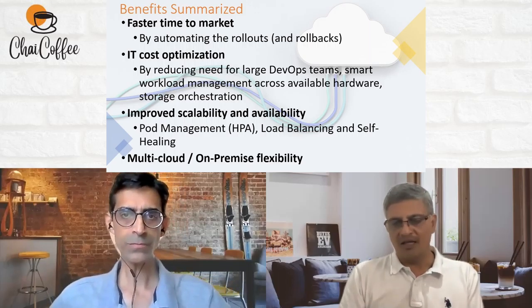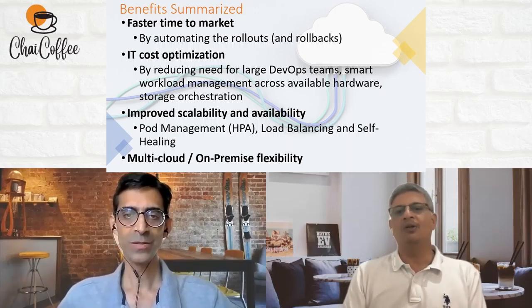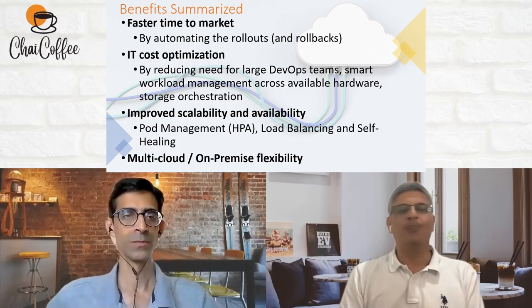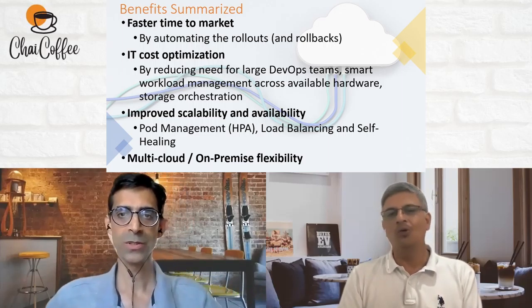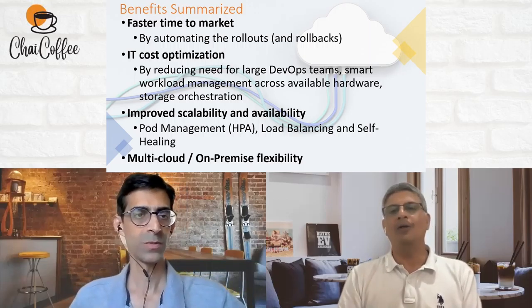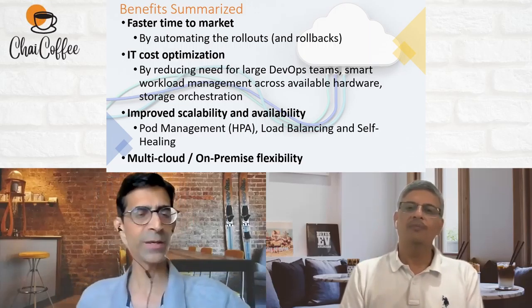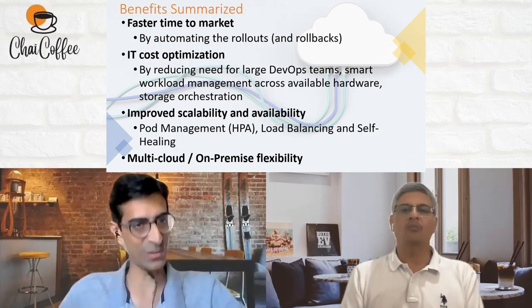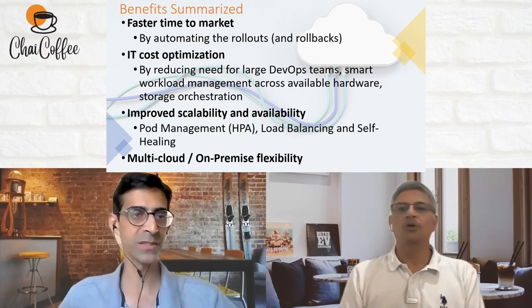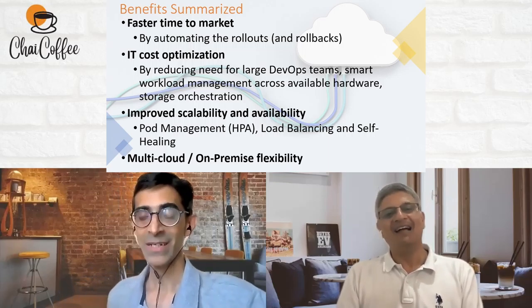Shopify grew really fast. E-commerce has many innovations now — auto-suggestions, personalized recommendations, discounts — all requiring fast rollout of services. Shopify had 500-plus services a few years back, meaning potentially thousands of pods, yet they were deploying 50 to 100 times a day. At any point, Kubernetes is continuously doing deployments, and for a global company it means deploying the same changes across clouds all over the globe.